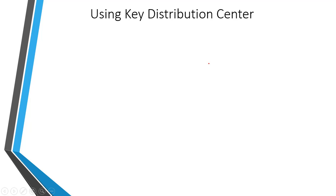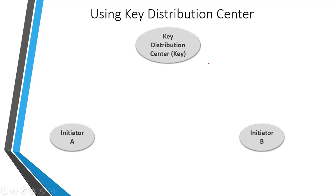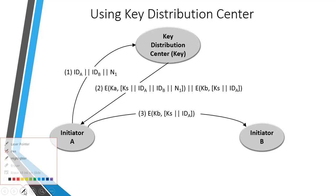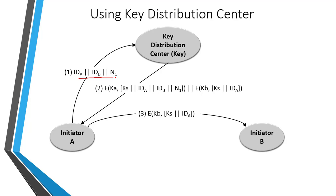Now we will see symmetric key distribution using the key distribution center. In this method, initiator A issues a request to the key distribution center for a session key to protect a logical connection to B. This message includes the ID of A, ID of B, and the nonce N1 which uniquely identifies this transaction.